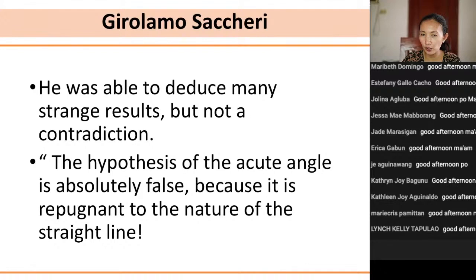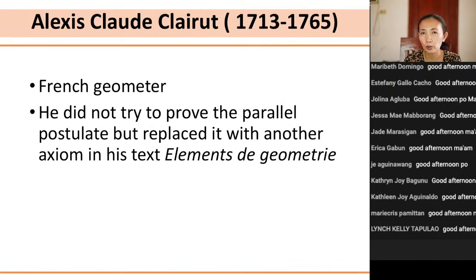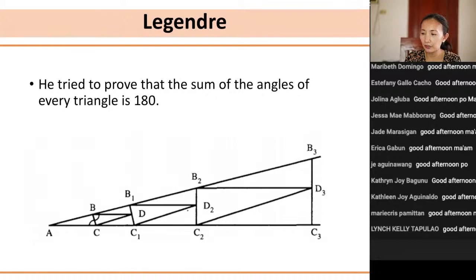Next, Alexis Claude Clairaut, a French geometer, did not try to prove the parallel postulate but replaced it with another axiom in his text Éléments de Géométrie — the Clairaut axiom. He made use of rectangles. According to him, rectangles exist — we observe rectangles everywhere in our houses and in things around us — and that according to him is sufficient to prove the fifth postulate. I will not go into the details of Clairaut's proof.